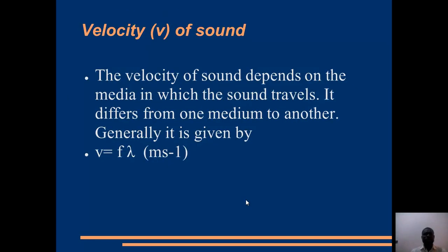The velocity of sound is not constant like that of electromagnetic waves, where the velocity is 3 × 10⁸ meters per second for all electromagnetic waves. Sound wave velocity depends on the medium through which it travels. The velocity of sound in air will be different from its velocity in a solid material. In all cases, velocity is given by the frequency of the sound times the wavelength, measured in meters per second.